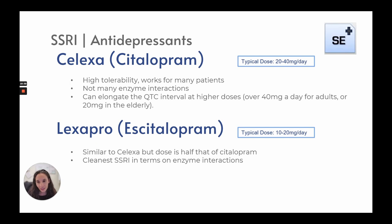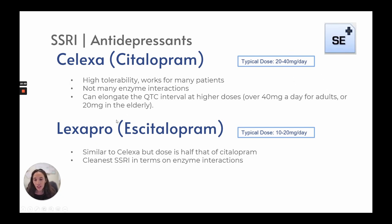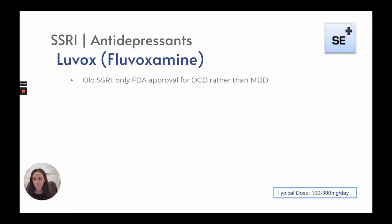Celexa has high tolerability and works for many patients with not many enzyme interactions, but it can prolong the QTc interval at high doses — over 40 milligrams a day for adults or 20 milligrams for the elderly. Typical dose is 20 to 40 milligrams. Lexapro is similar to Celexa but the dose is half, at 10 to 20 milligrams a day, and it is the cleanest SSRI in terms of enzyme interactions. Luvox is an older SSRI, only FDA approved for OCD rather than major depressive disorder, with a typical dose of 100 to 300 milligrams per day.